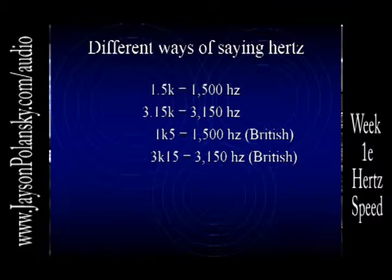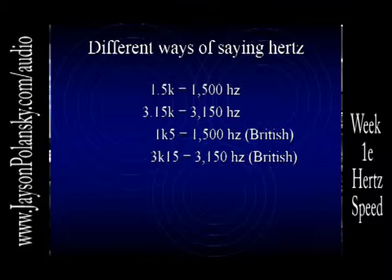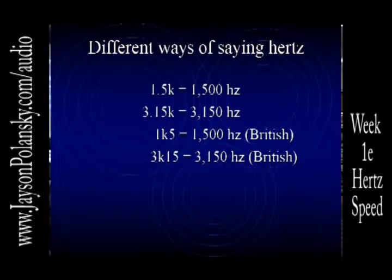Every once in a while you hear it differently. The British use it this way — they'll say 1k5, meaning 1,500. They'll leave the decimal point out and put the k in where the point is. So 1k5, 1k, or 3k15 all represent the same thing.